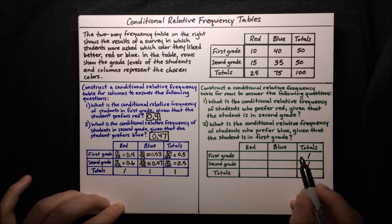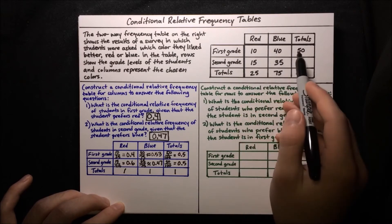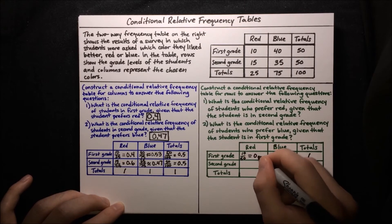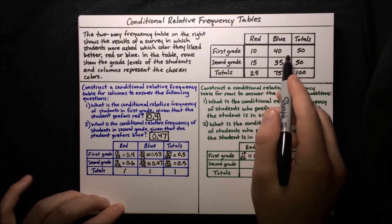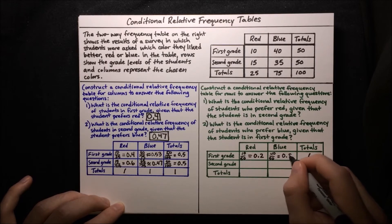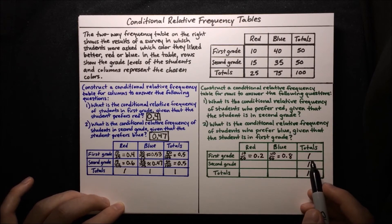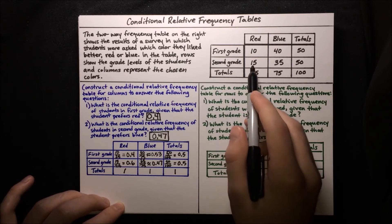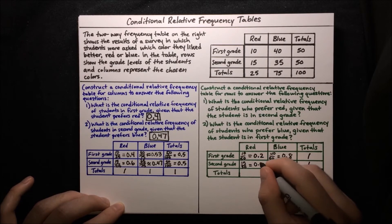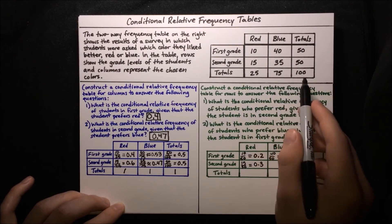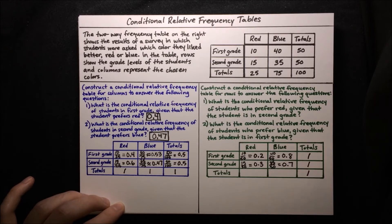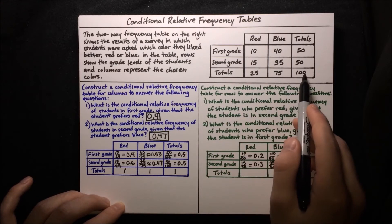So we're just dividing each row by its row total. The first entry will be 10 divided by 50, which is 0.2. The second entry in that row will be 40 divided by 50, which is 0.8 — and indeed those add up to 1. For the second row, divide 15 by 50: 15 over 50 equals 0.3. Then divide 35 by 50: 35 over 50 equals 0.7.